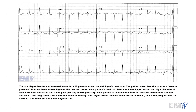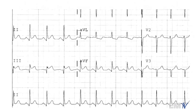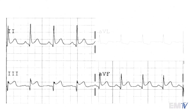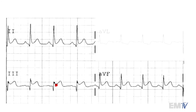The next lead grouping I like to look at are the inferior leads, because they're clumped together and easy to move to next. Your inferior leads are leads 2, 3, and aVF. Right away it's very obvious that lead 3 has a significant amount of ST segment elevation above the isoelectric line, as does aVF. Lead 2 is still elevated but not as significant. So I have more than enough here to call ST segment elevation in the inferior leads.